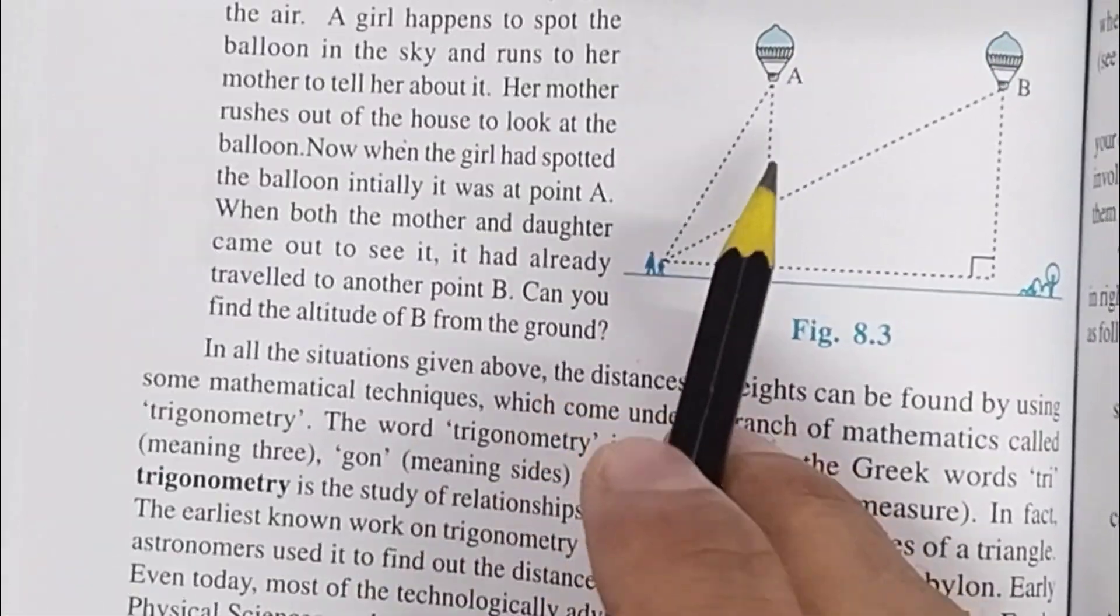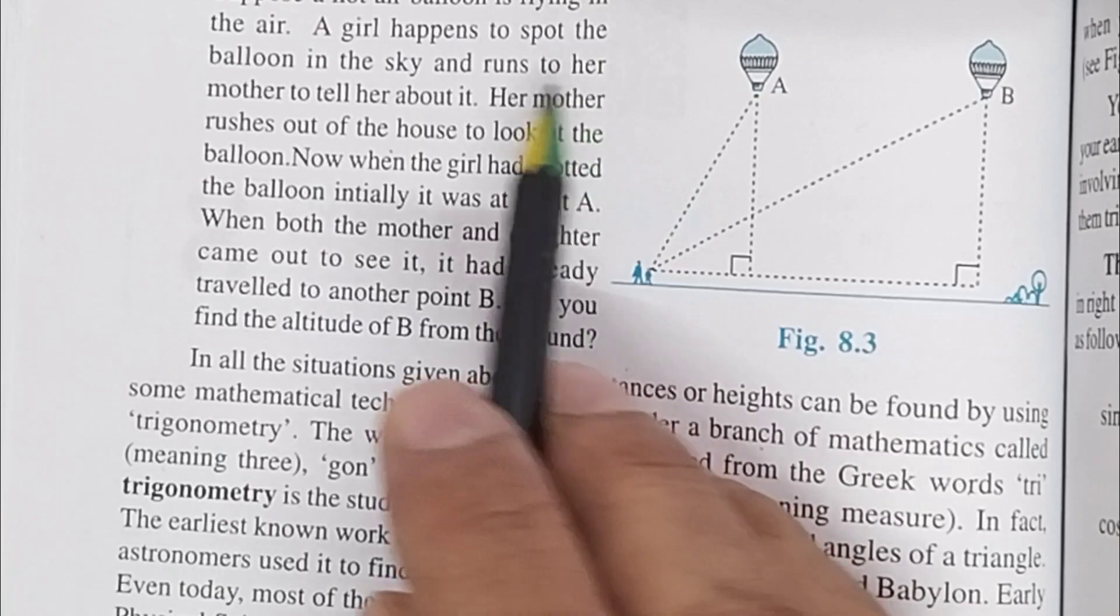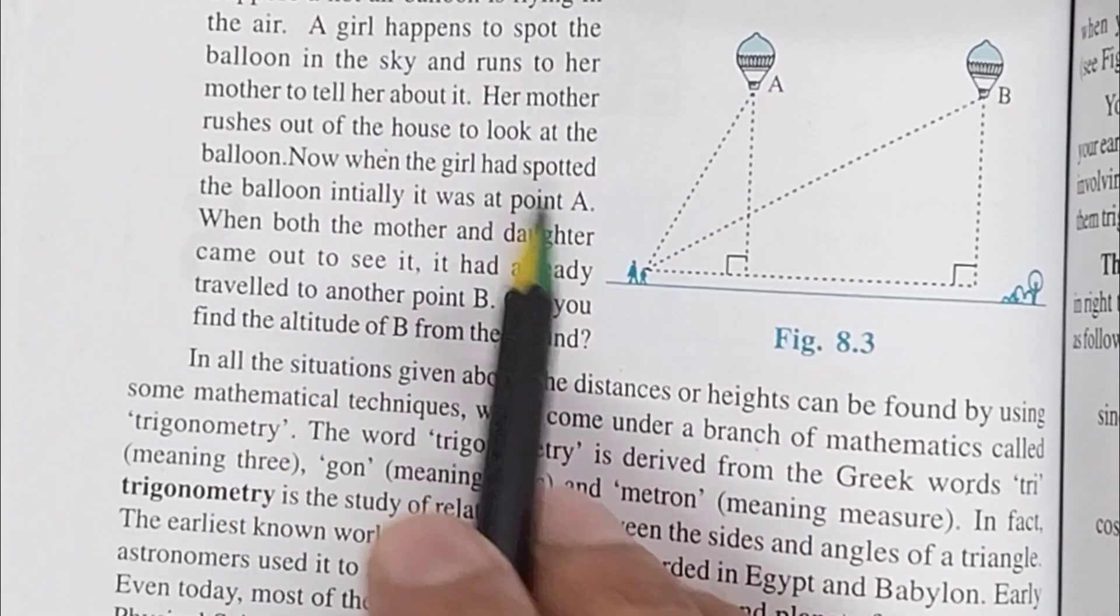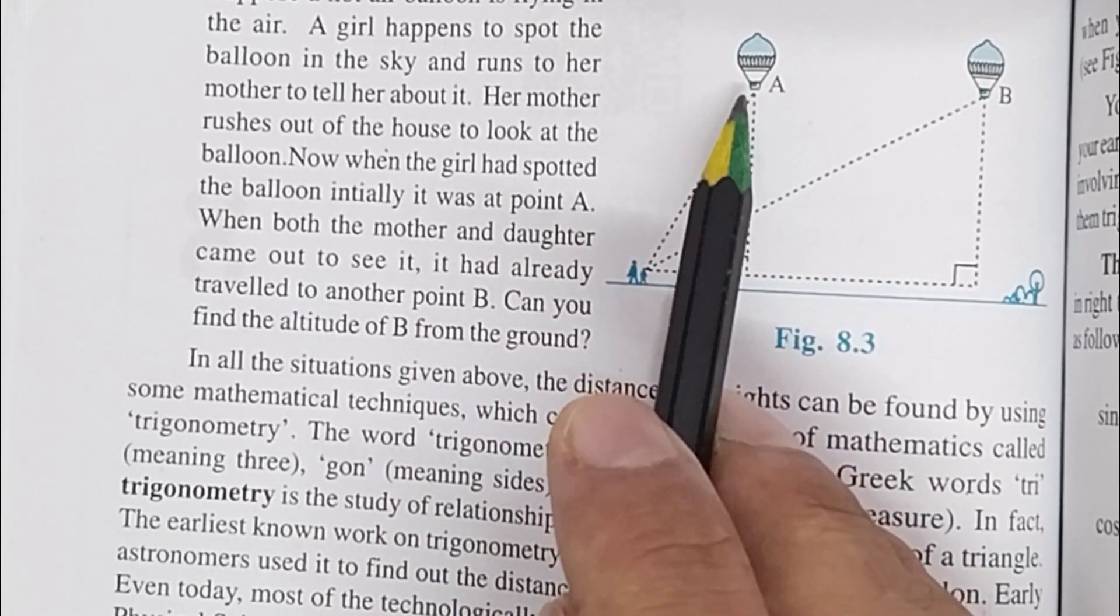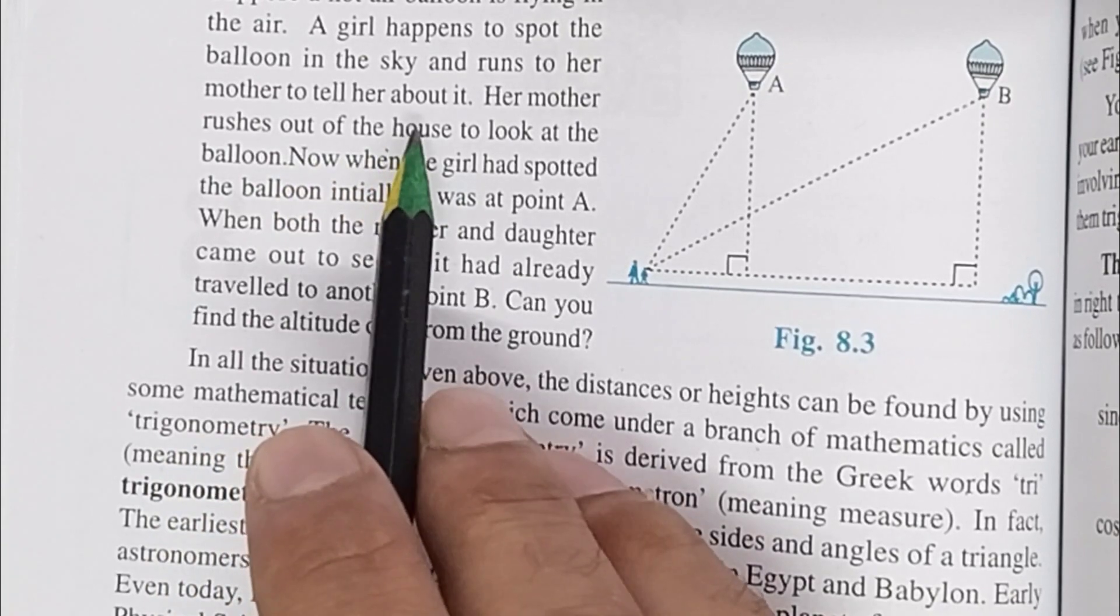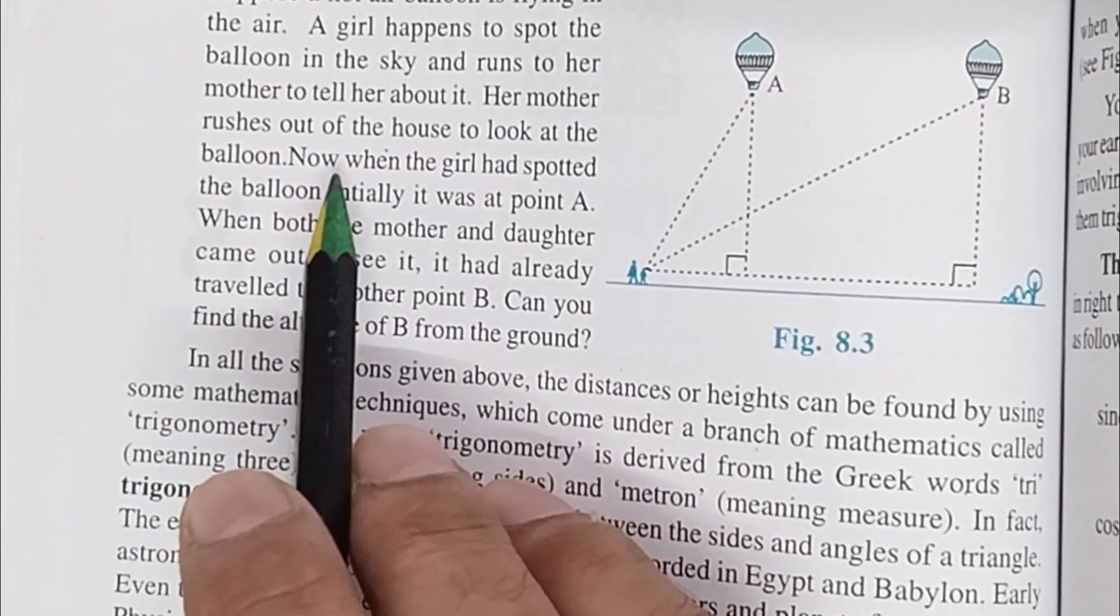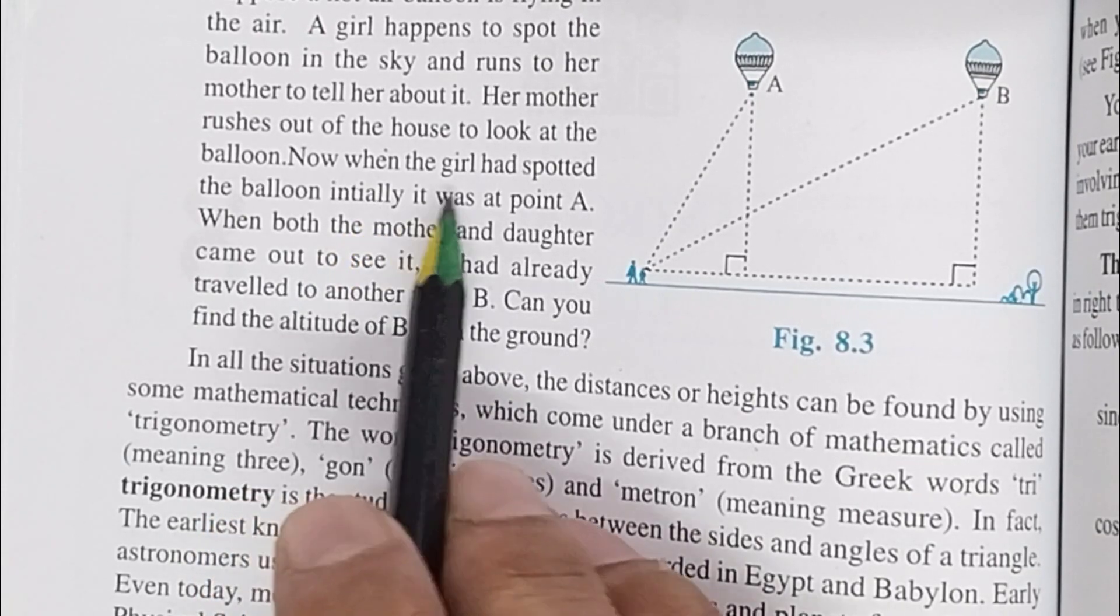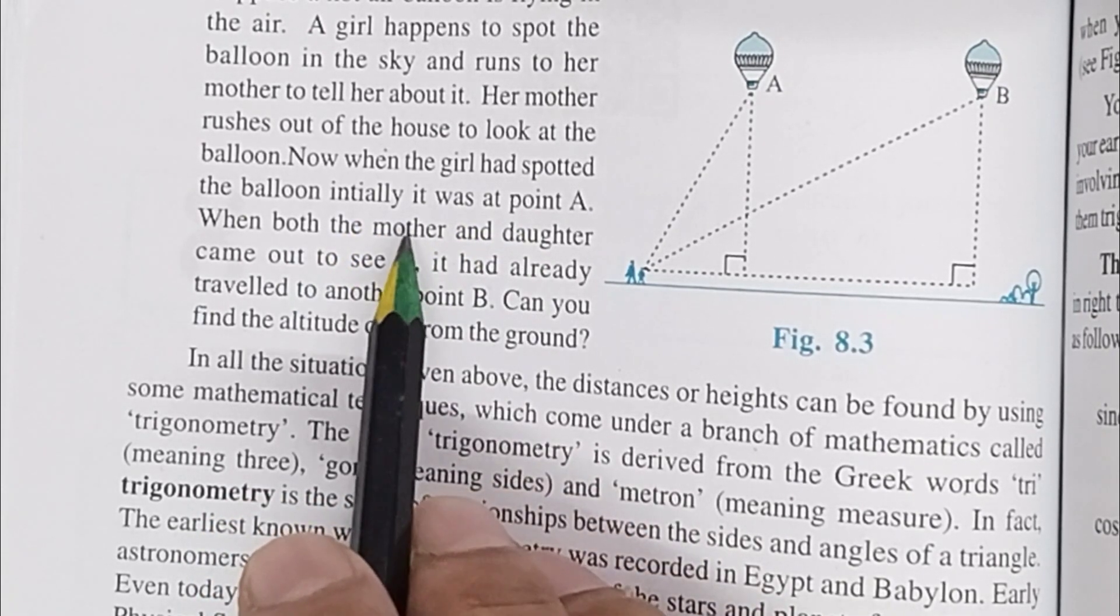There is a balloon flying here, a hot air balloon is flying in the air. A girl happened to spot the balloon in the sky and runs to her mother to tell about it. Her mother also rushes out of the house to look at the balloon.